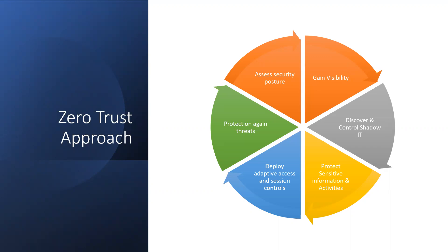We need to have all the information about what is happening inside our environment, specifically in our applications — who is accessing, what they are accessing, from where they are accessing, and whether they are accessing from compliant devices. So visibility into the activities and data in our applications. We should adopt Microsoft Defender for Cloud Apps to get the visibility, governance, action, and usage. That is our tool to gain visibility for the Zero Trust approach in our applications.